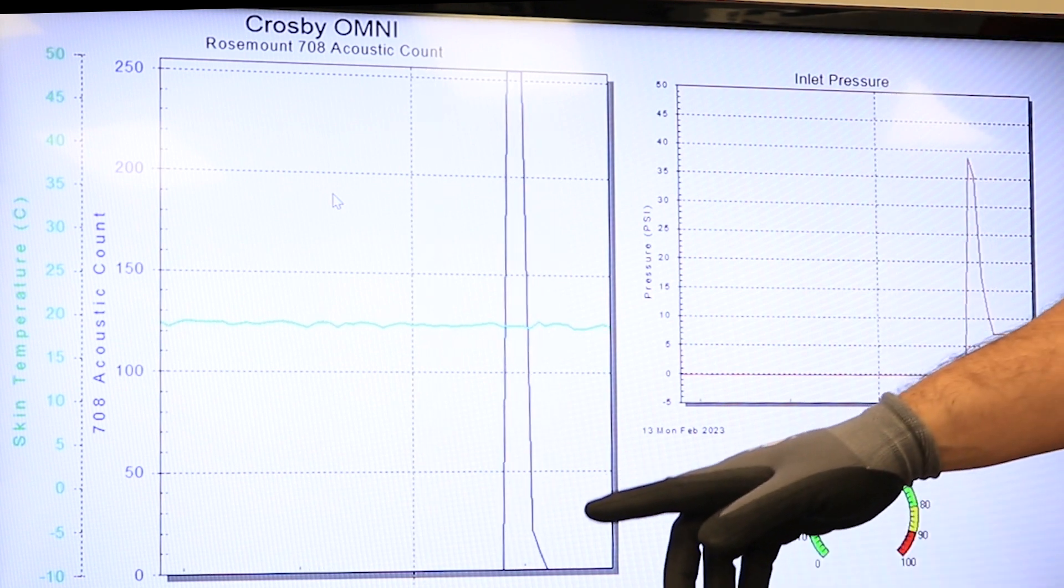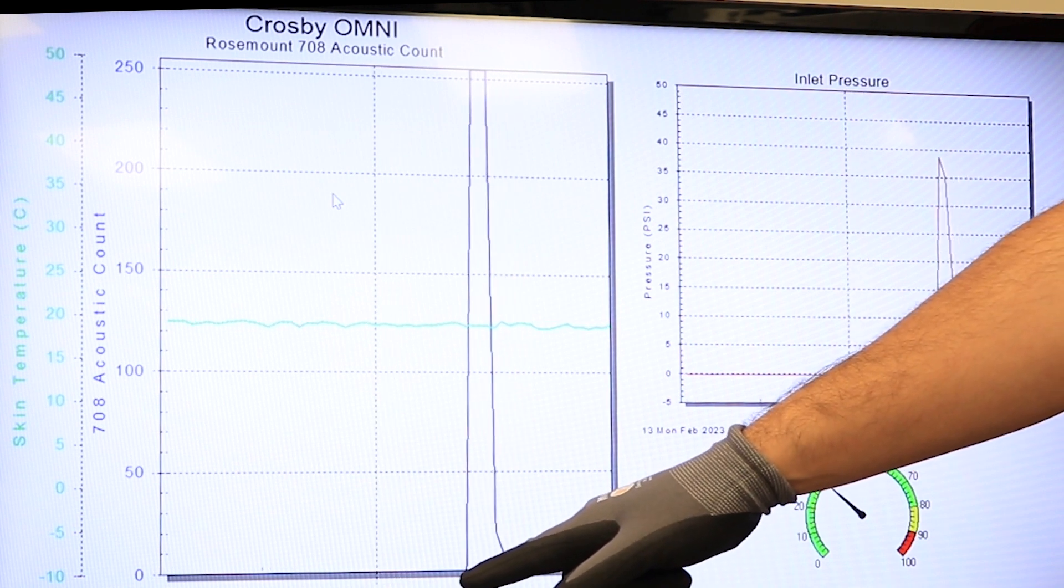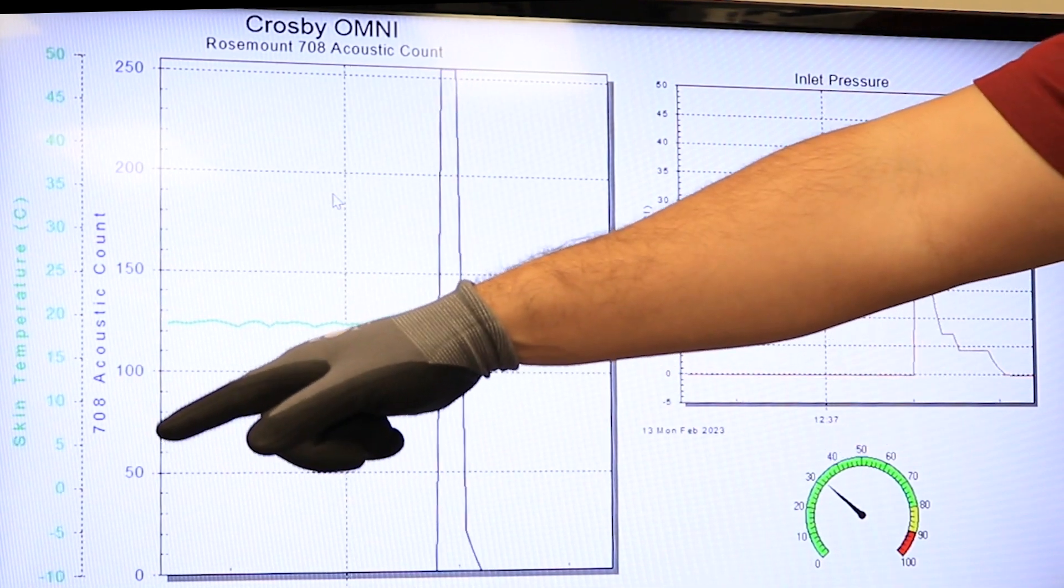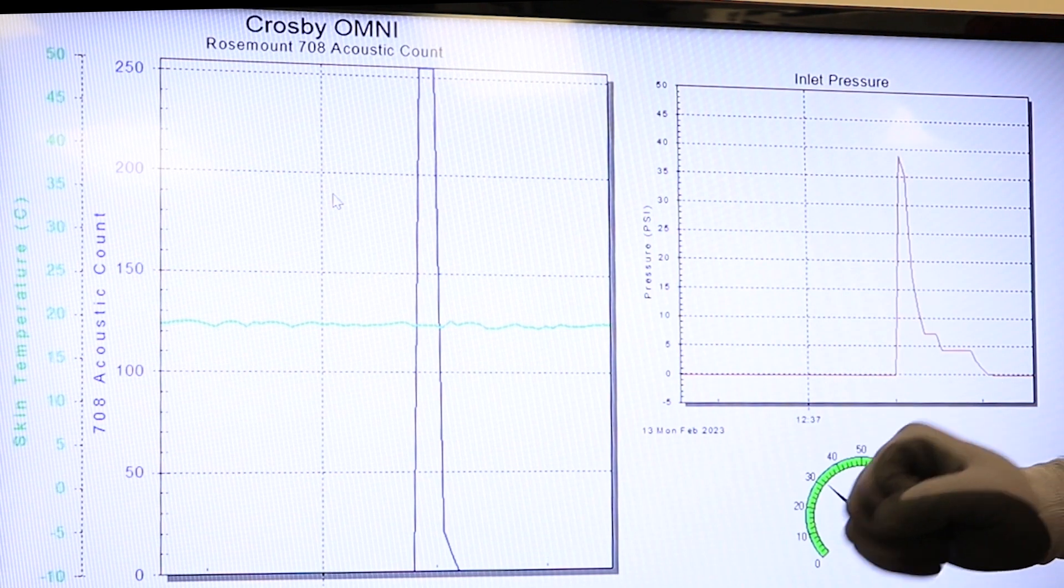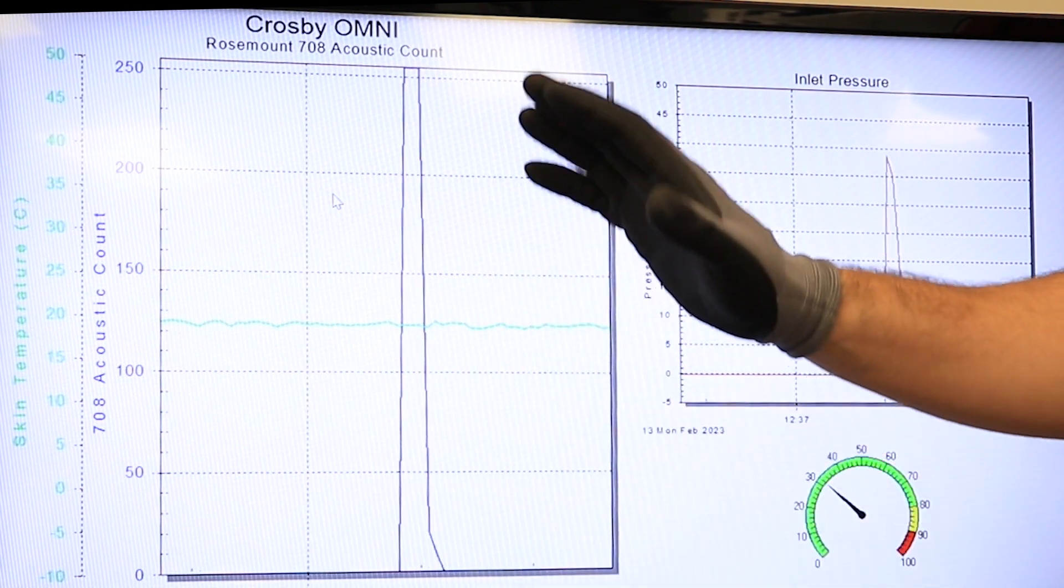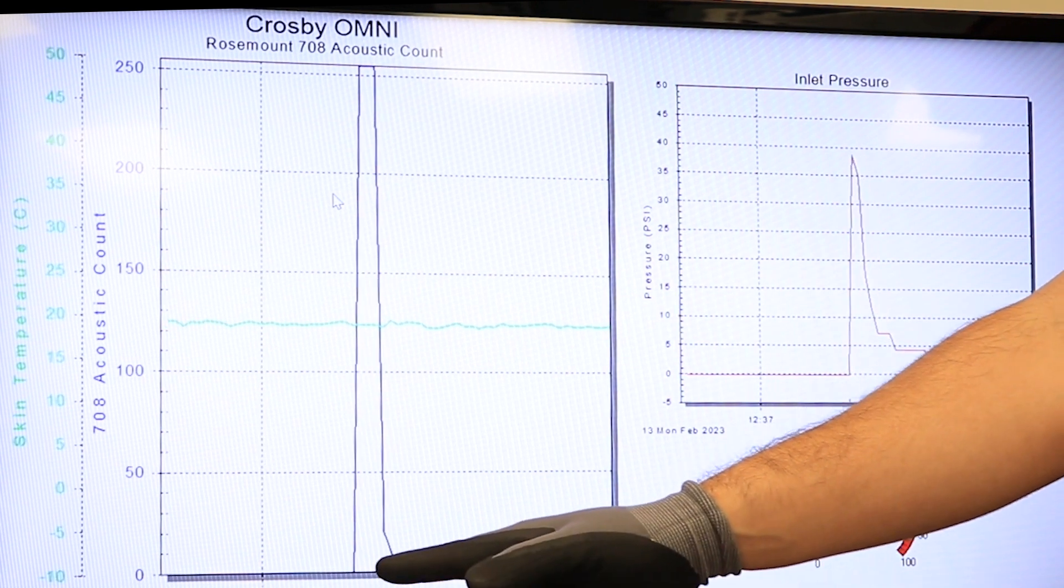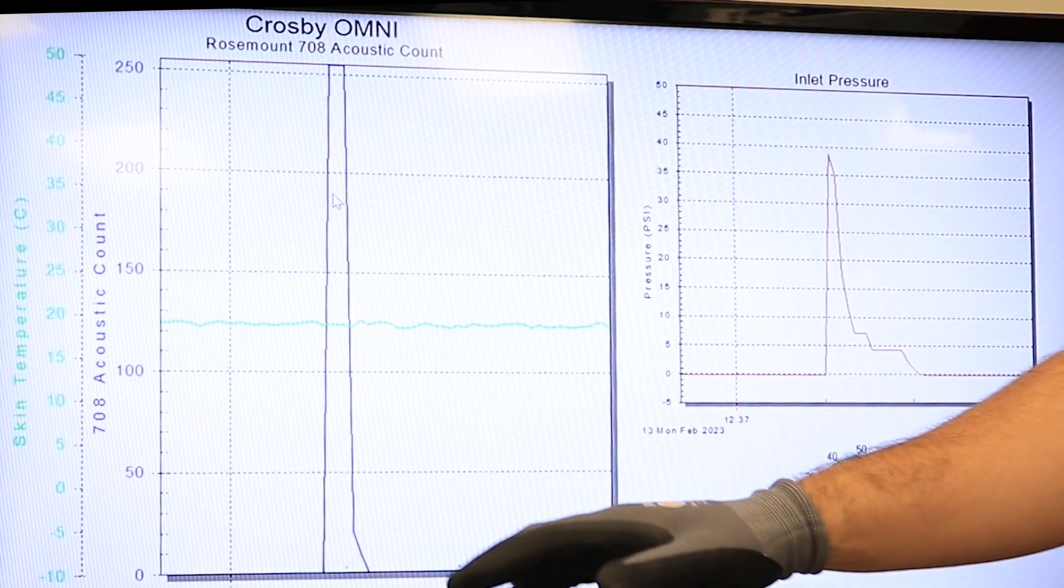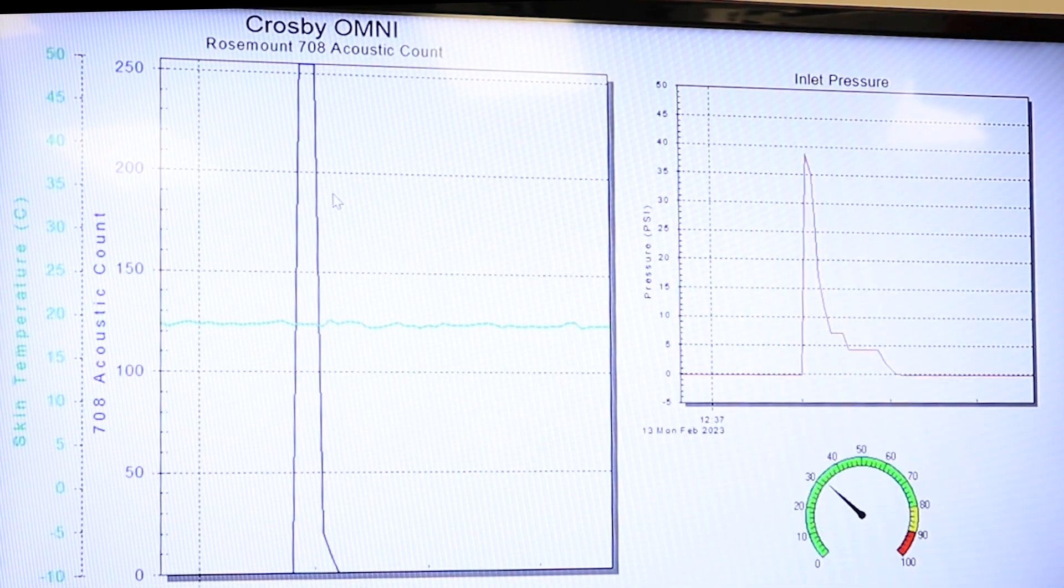As we can see here, the graph shows us when the valve opened and when the valve closed. There is no way to correlate the acoustic counts to how much the valve was opening. So, basically the information that we get from the 708 is discrete. Valve is closed all the way up to here and then it opens and it recloses at this point, giving us a time stamp of when the pressure relief event happened as well as the duration of the pressure relief event.